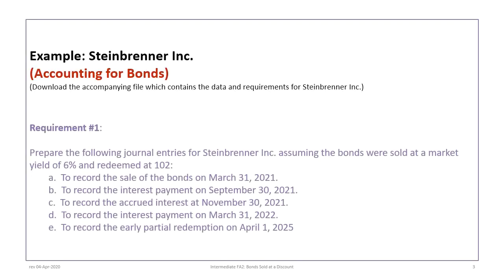This tutorial is based on the Steinbrenner Inc. example, so please make sure that you download the correct file and review the data and requirements before proceeding. We will start with requirement one, which has a series of sub-requirements to record journal entries — assuming the bonds were sold at a yield of 6% and then later redeemed at 102.